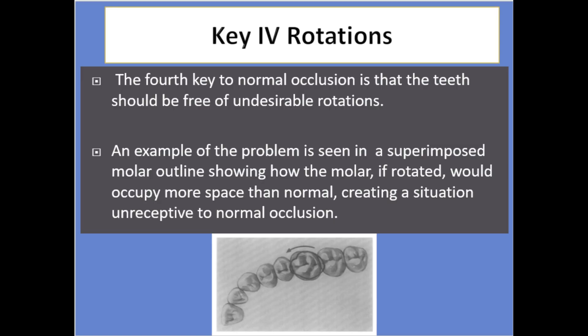The 4th key to normal occlusion is that the teeth should be free of undesirable rotations. An example of the problem is seen in a superimposed molar outline showing how the molar, if rotated, would occupy more space than normal, creating a situation unreceptive to normal occlusion.